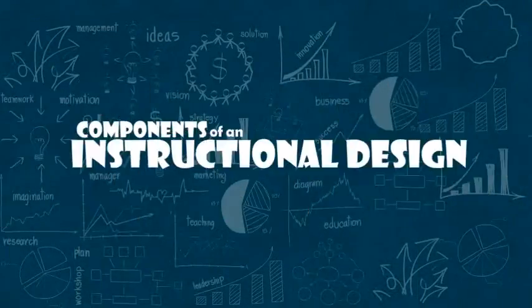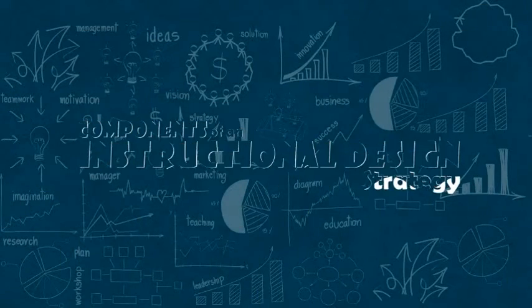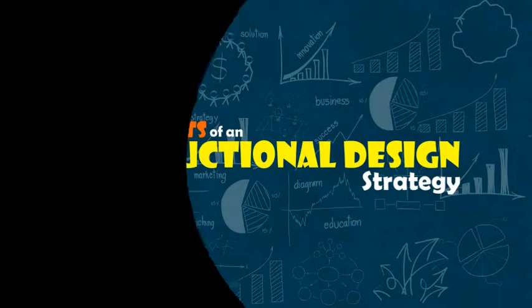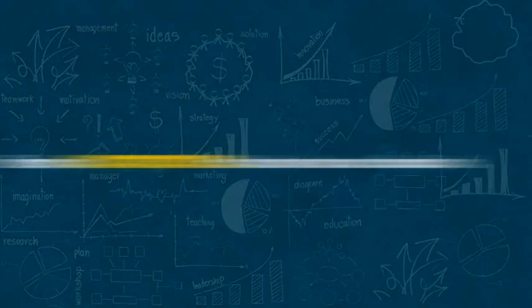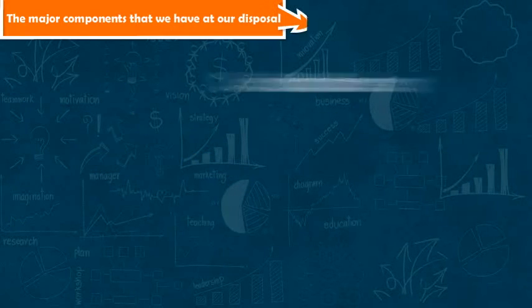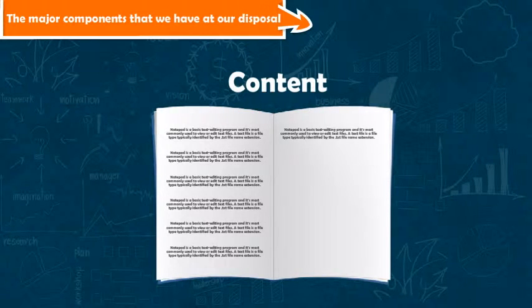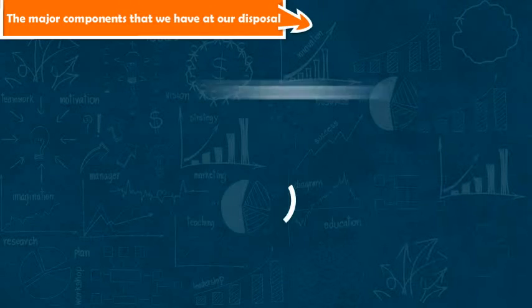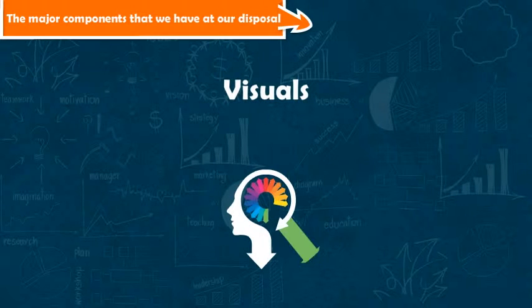We will discuss the components of an instructional design strategy. The major components we have at our disposal are content, and then we have the visual part, which is the GUI itself — graphics, pictures, and various graphic elements.